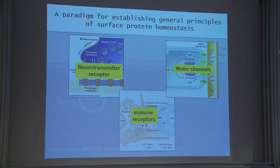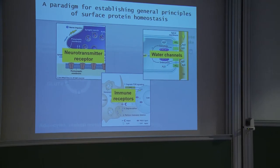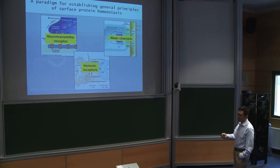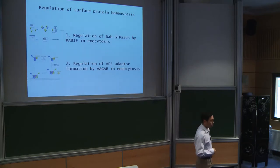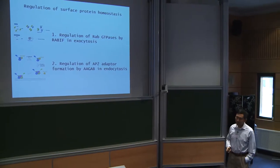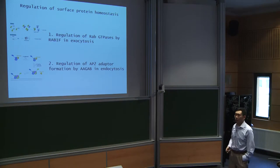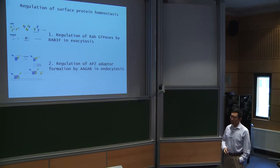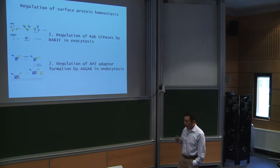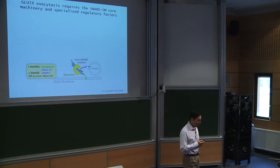As much as we love GLUT4 exocytosis, our major goal is to use it as a paradigm to establish general principles of surface protein homeostasis. We expect our findings can be extended to understand the trafficking of neurotransmitter receptors in neurons, the transport of water channels in kidney epithelial cells, and the trafficking of immune receptors in the immune system. Today I'm going to tell you two stories on the regulation of surface protein homeostasis — beginning with a short story on regulation of Rab GTPases by a protein called RABIF in exocytosis, then focusing on a recent finding on regulation of AP2 adapter formation by AAGAP in endocytosis.